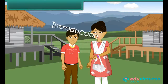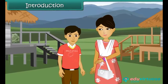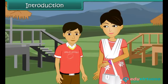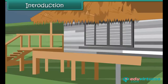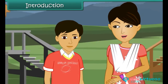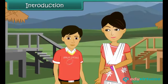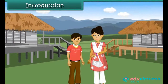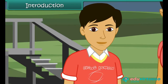Hrithik is on a vacation to Meghalaya. He finds that most houses are built at some height from the ground with the help of a few pillars. He asks his mother the reason for it. His mother explains that the state receives heavy rainfall every year, so in order to prevent rainwater from entering and damaging the houses, the houses are built on stilts.